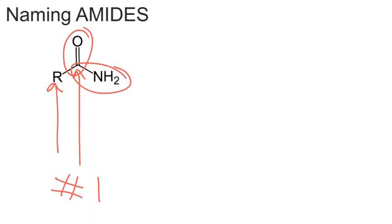So let's have a look at the simplest example I have. As you can see, this is the simplest one I've got at the moment, and we can see here we've got one, two carbons inside our molecule, and so the name for this one is going to be ethanamide.